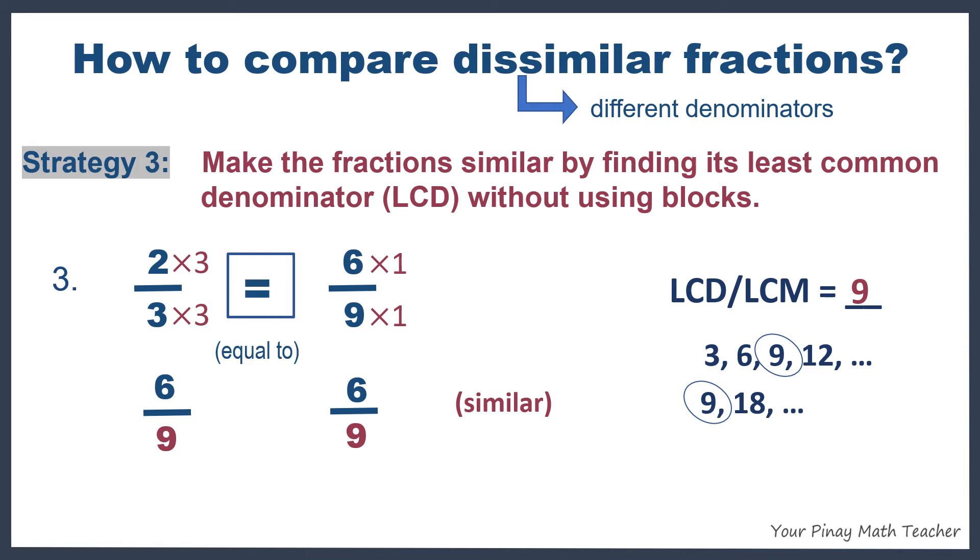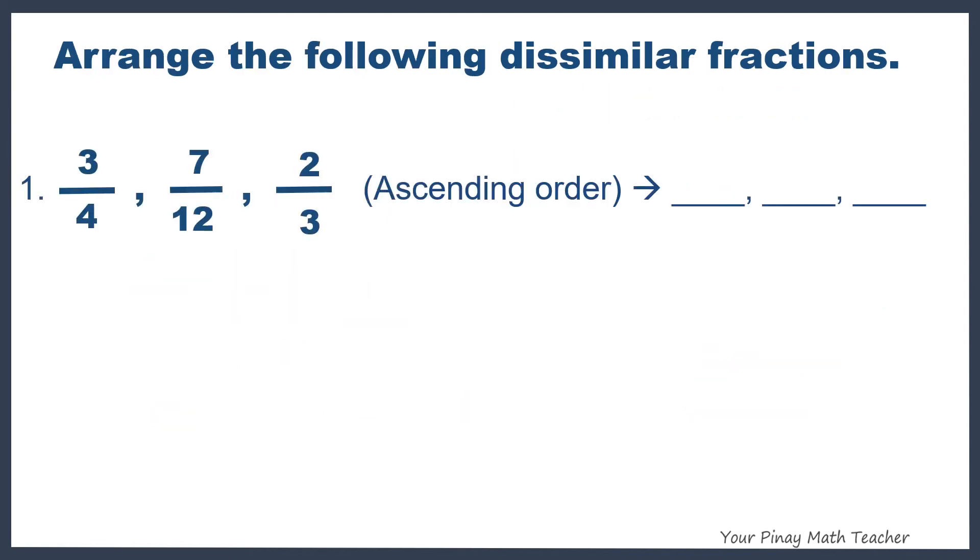then 2 thirds is equal to 6 9ths. You might be thinking or saying that there is another way to do or to compare dissimilar fractions. Yes, there is. But the reason why I showed this way is because this strategy is useful especially when you add and subtract dissimilar fractions. At this time,